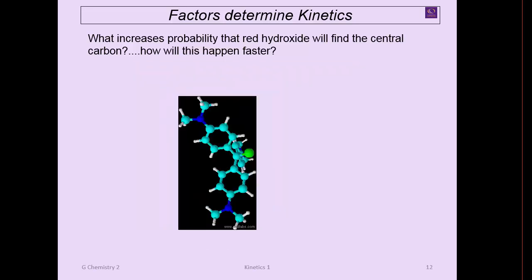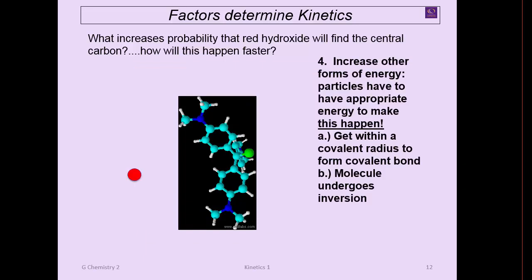What's another way to increase the probability of finding that? There's other ways to increase the energy. We talked about thermal energy, which is going to make this thing travel faster. But the idea is that I've got to get this within the covalent radius. It's got to get close enough. And remember, these are electronic, so they're usually repulsed by the electrons in all these atoms. The atom has to have enough energy to get in there. There also has to be enough energy to undergo inversion. That's the second part of this.